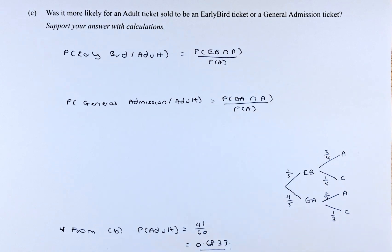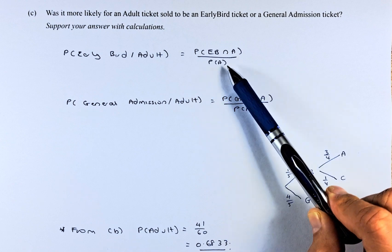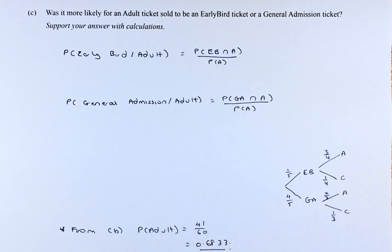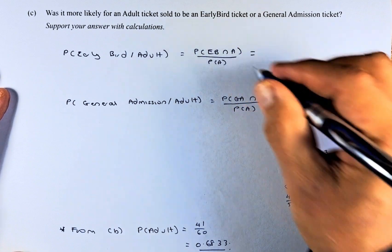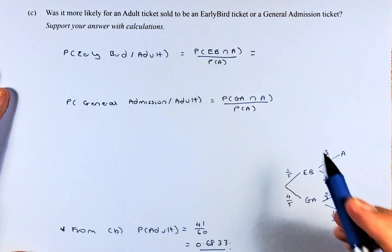We know the probability of adult is 41 over 60, so we substitute the denominator with 41 over 60. From the tree diagram, the probability of early bird and adult is 1/5 times 3/4.